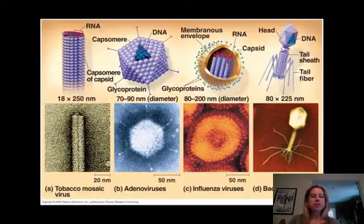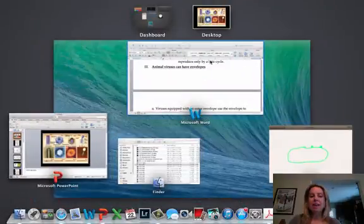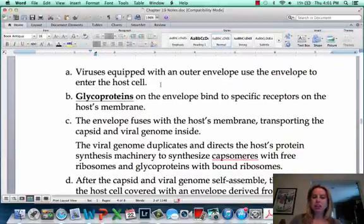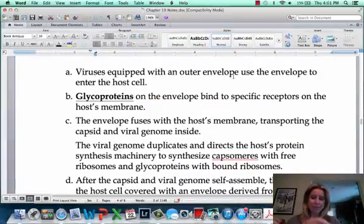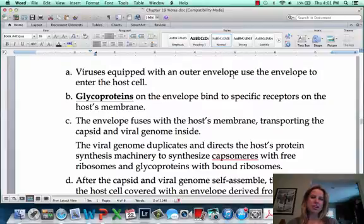If you remember in this picture, I pointed out how this one has that yellow coating around it, and that's going to be an envelope. So animal viruses tend to have that membranous envelope. What they can do is use that envelope to get into the cell — they're not actually injecting their genome, they're kind of doing an endocytosis situation where they dump their contents into the cell.